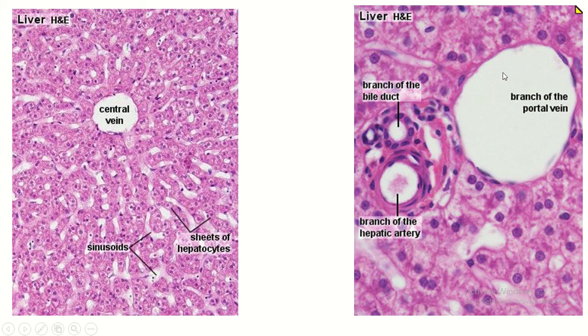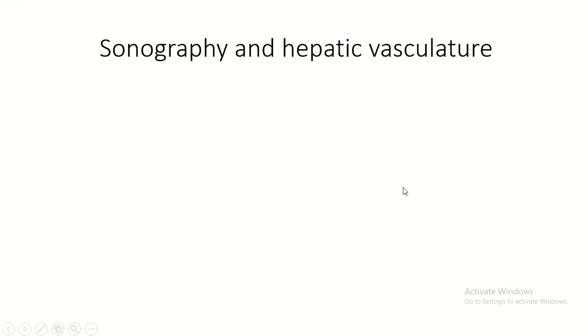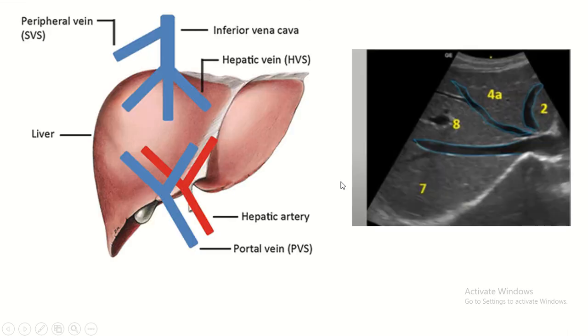At the periphery of the classical hepatic lobule you can see the smaller branches of the portal vein and the smaller branches of the hepatic artery forming the portal triad.